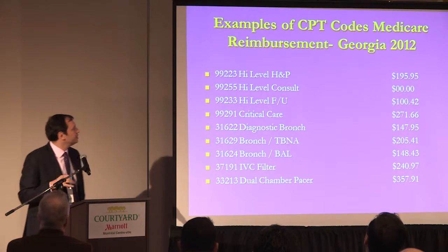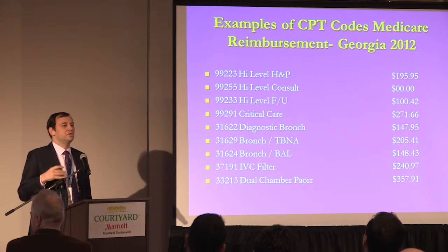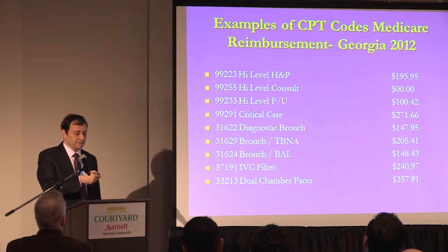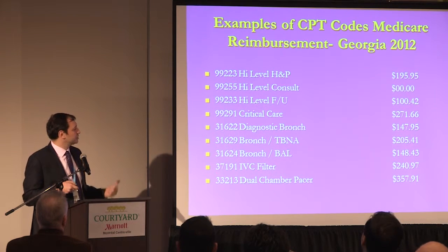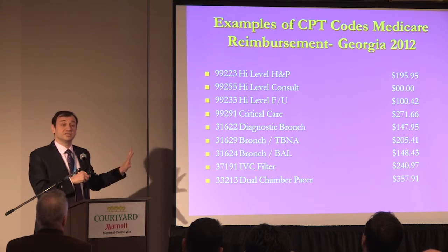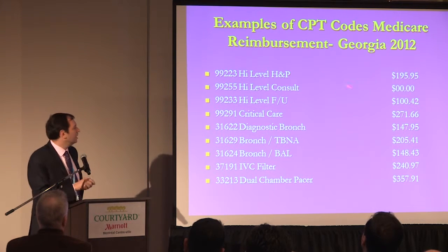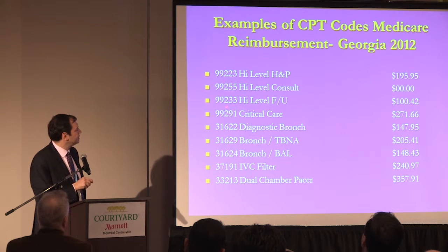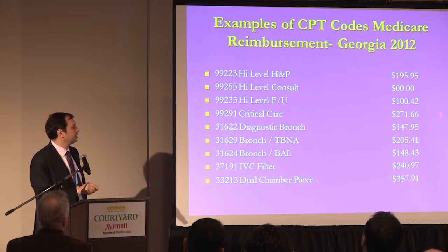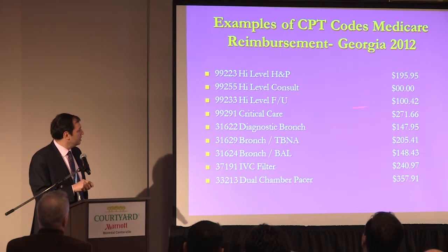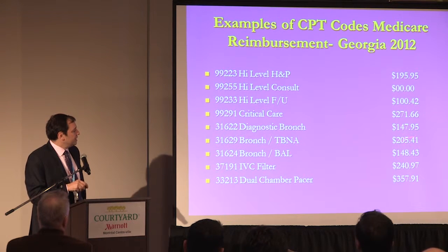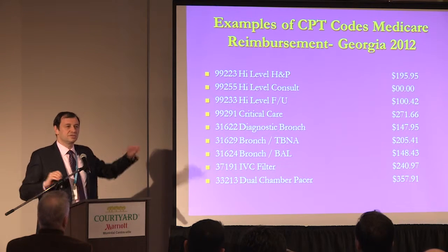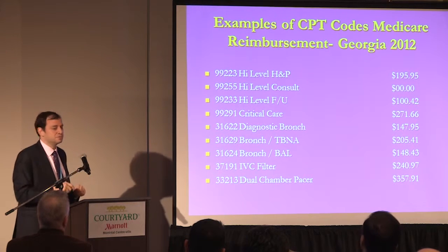What we know are the public rates — the Medicare rates. We don't know what each institution negotiates, but we have access to public rates, and they differ from state to state. As an example from Georgia 2012 Medicare reimbursement — these are all professional fees — a high-level H&P is about $195, a high-level follow-up about $100, critical care about $271 for the first code, diagnostic bronc about $150, TBNA about $205. There's variation from state to state — Scott may have used Pennsylvania figures.